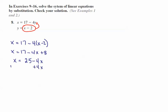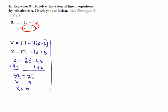Adding 4x to both sides gives me 5x is equal to 25. Dividing by 5 gives me x is 5. Since x is 5, I go on to the second step: I want to use either equation to plug in x equals 5. I'll use the second one because that appears to be the simplest equation. y is equal to x minus 2, but x is 5, so y is equal to 5 minus 2, which gives y is equal to 3.